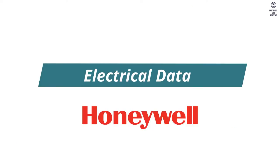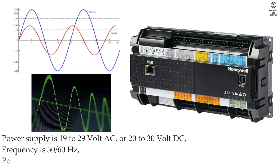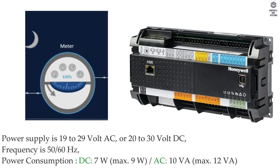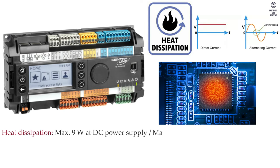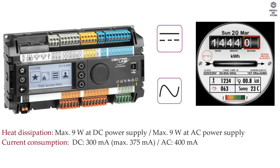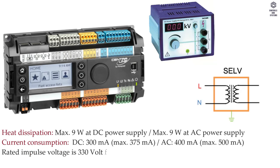Electrical data: power supply is 19 to 29 V AC or 20 to 30 V DC, frequency is 50 or 60 Hz. Power consumption in DC is 7 W, in AC is 10 VA. Heat dissipation is maximum 9 W. Current consumption in DC is 300 mA, in AC is 400 mA. Rated impulse voltage is 330 V, and 2500 V for relay outputs.